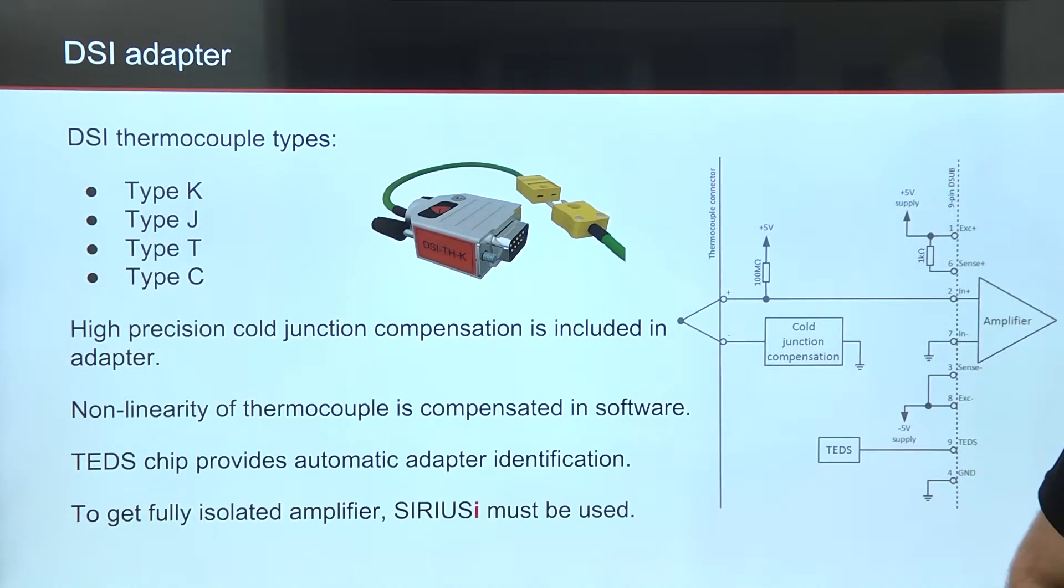DSI adapter supports common thermocouple types but is built for only one. It has included cold junction compensation and TEDS for automatic adapter identification, but non-linearity is compensated in DeweSoft software. If you don't use the correct thermocouple type, cold junction compensation circuit will set wrong offset and DeweSoft will calculate wrong temperature.